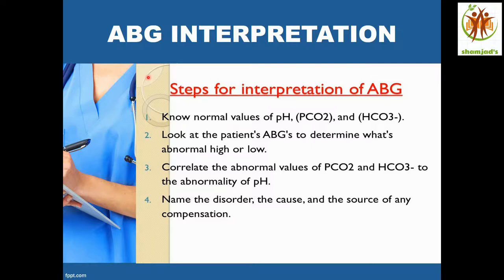Considering the human body: if there is respiratory acidosis, the body will compensate with metabolic alkalosis. Likewise, if there is respiratory alkalosis, the body will compensate with metabolic acidosis. As a result of this mechanism, the pH value will remain normal — that is the ultimate aim.